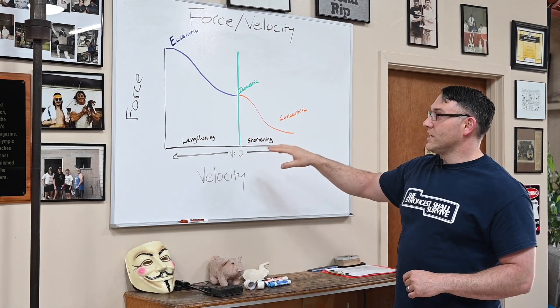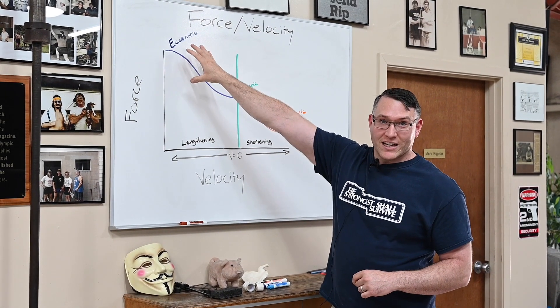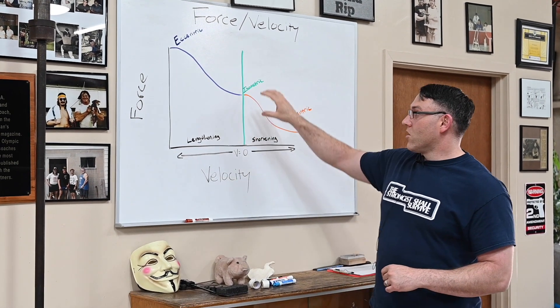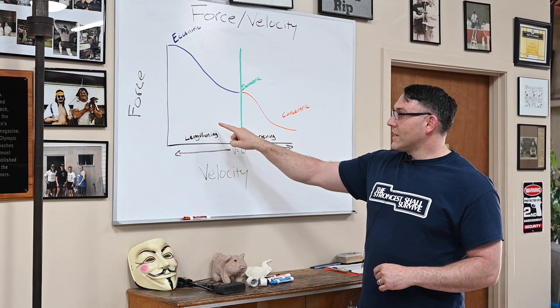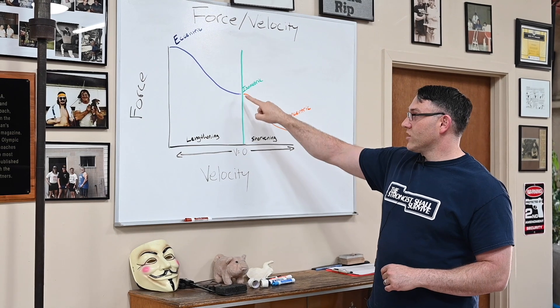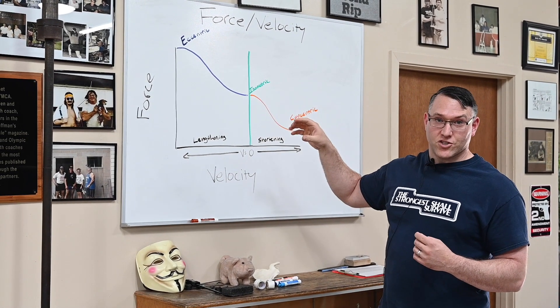What we also see here is that we are always stronger eccentrically than we are isometrically or concentrically. So as velocity decreases and eventually gets to zero, we have an isometric muscle action.